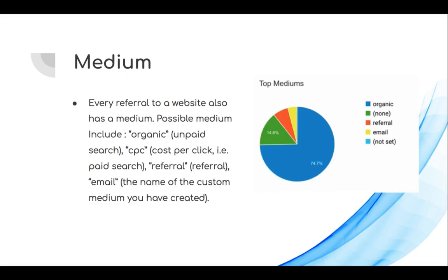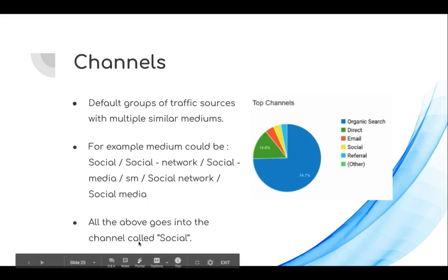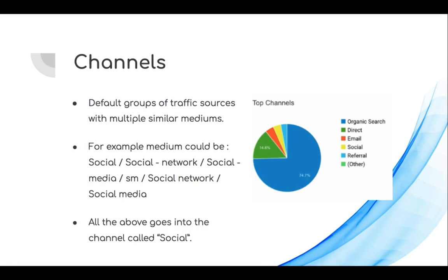To solve the inconsistency in medium, there is something called channels. Channels are different groups of traffic sources with multiple similar mediums, and they are standardized by Google Analytics. Examples include organic search, direct, email, social, and referral. Mediums like 'social', 'social-network', 'social-media', 'SM', or 'social network' all roll up into the channel called social. When looking at reports, I recommend focusing on source and channels rather than medium, as channels give a clearer, broader view of where your traffic is coming from.